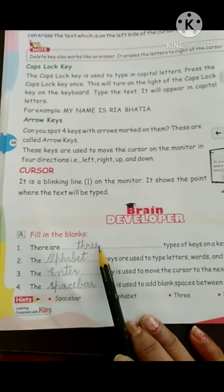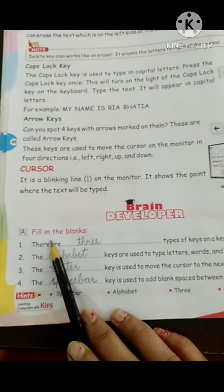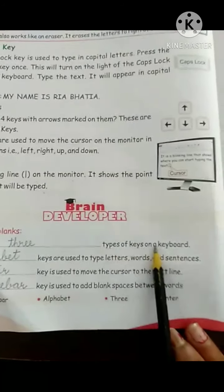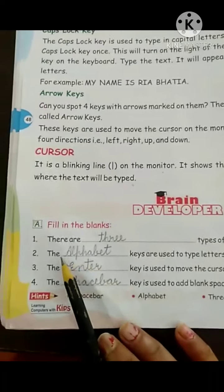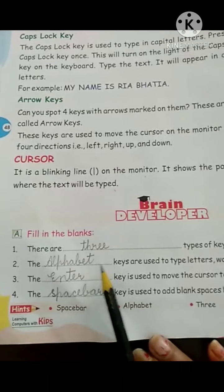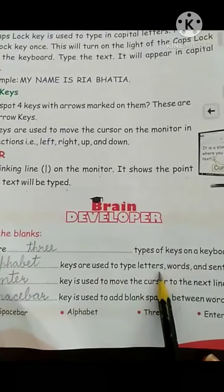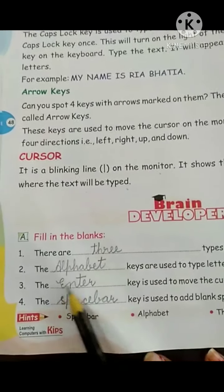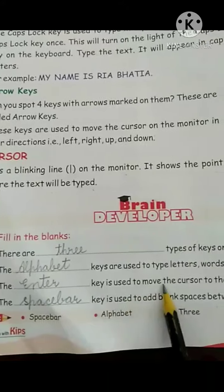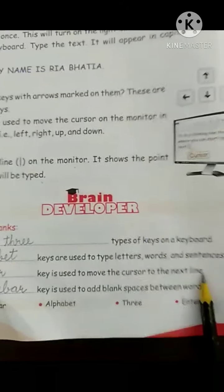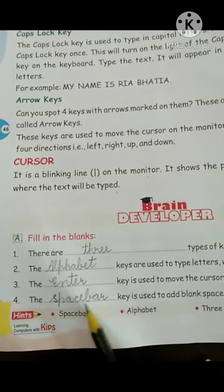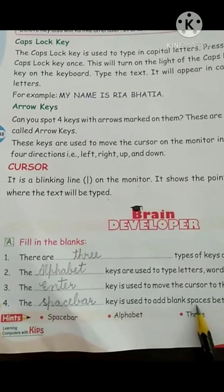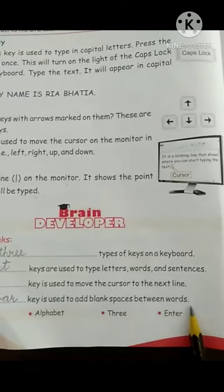Now, book exercise. Question A — Fill in the blanks. First: there are three types of keys on a keyboard. Second: the alphabet keys are used to type letters, words, and sentences. Third: the enter key is used to move the cursor to the next line. Fourth: the space bar key is used to add blank spaces between words.